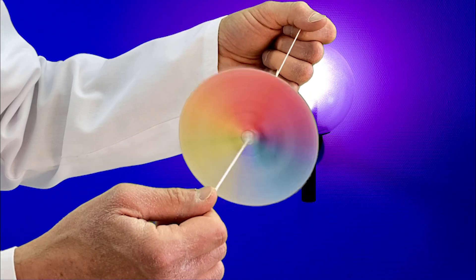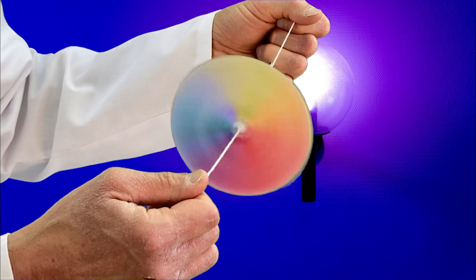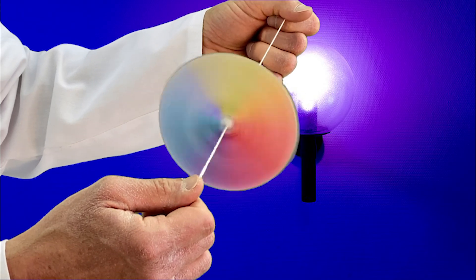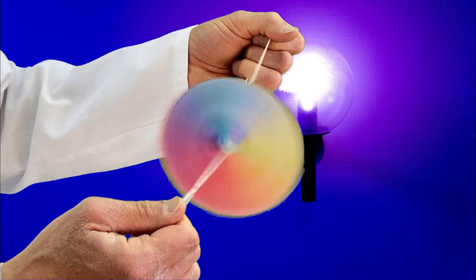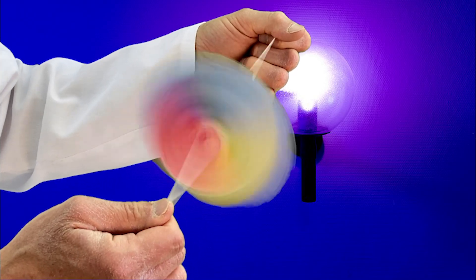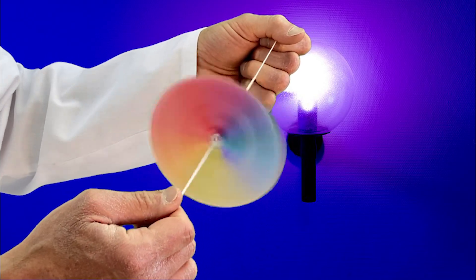Let's see what happens. The Newton disk is a well-known physics experiment invented by Isaac Newton. My disk only has six segments in rainbow colors.